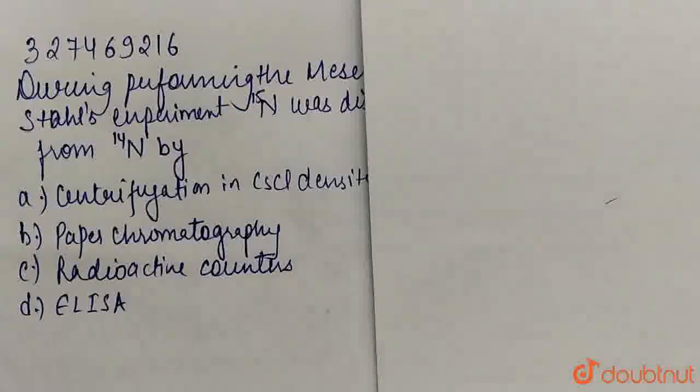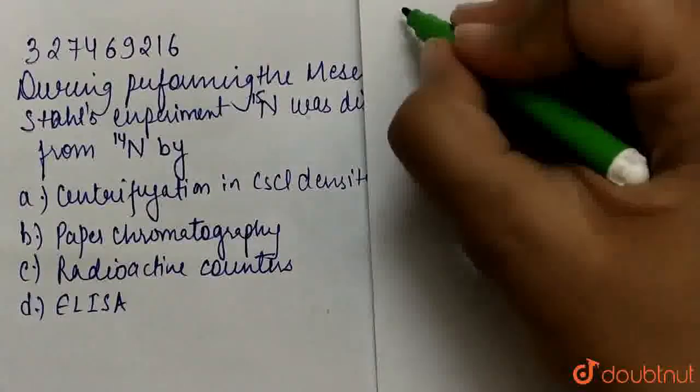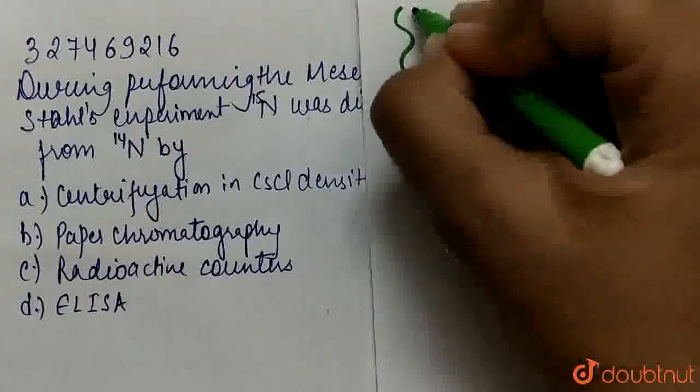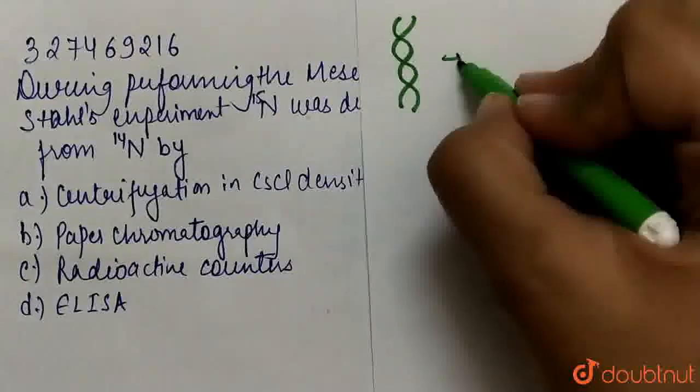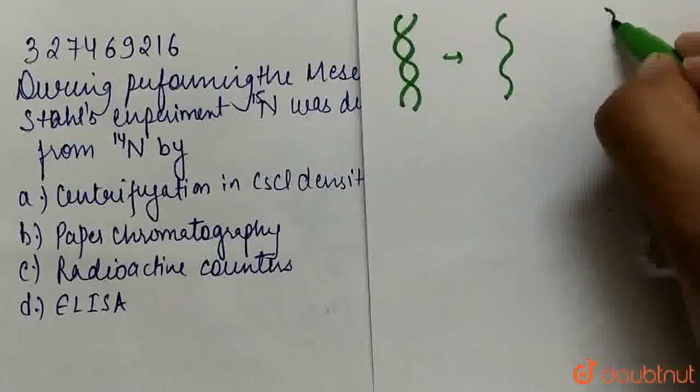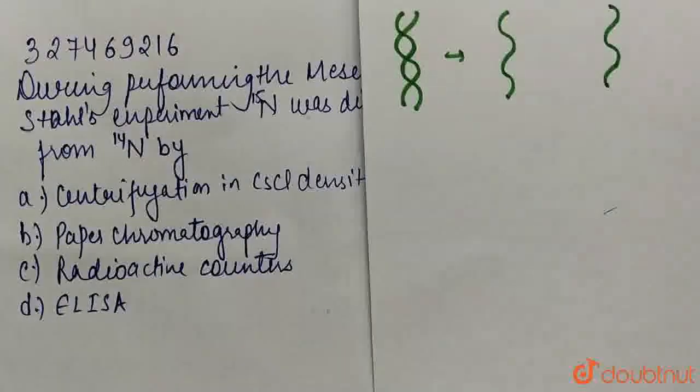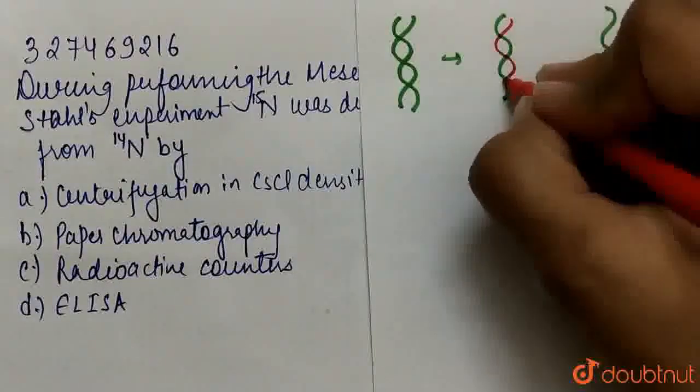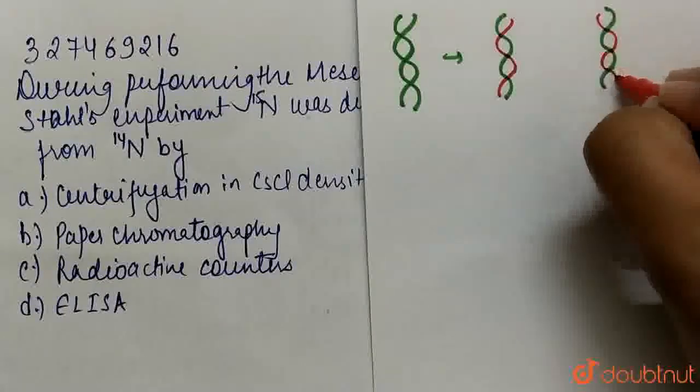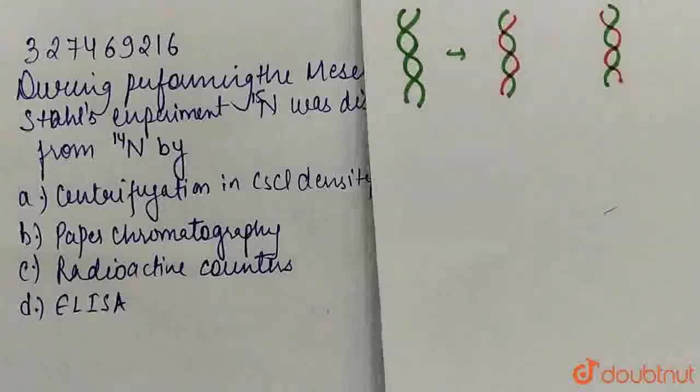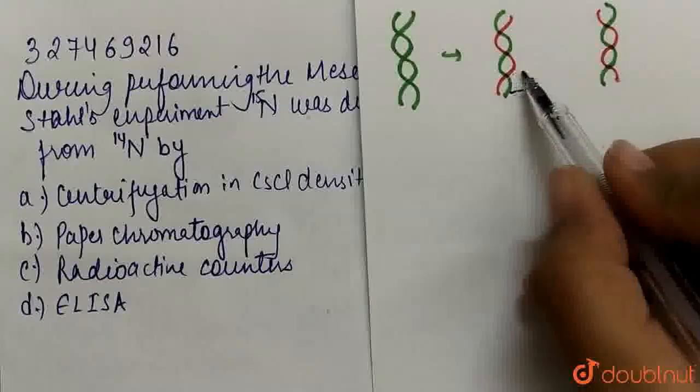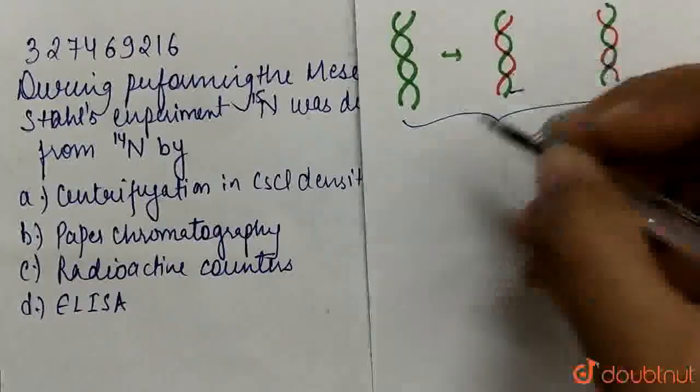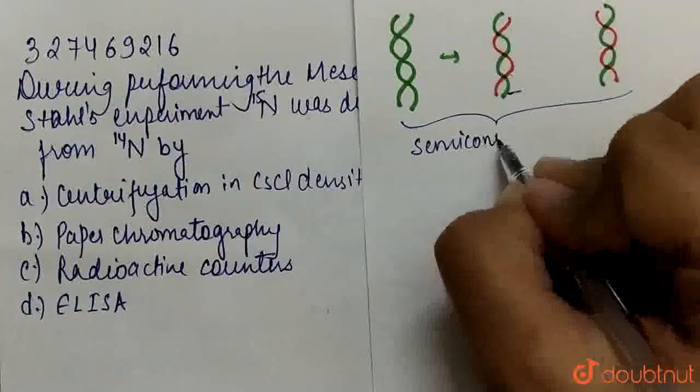This mechanism is called semi-conservative method of replication. So if we understand this, this is my parental DNA. One strand will act as a template, and we will have our new DNA strand with complementary sequence. This is called semi-conservative replication.